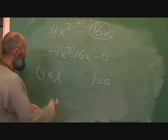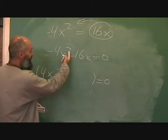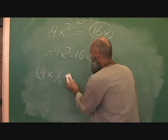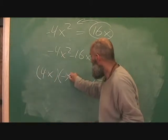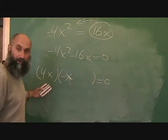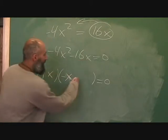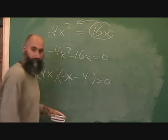What's left here is that's negative 4, so you need negative 1 here, and you have an x squared, you've got an x, so negative x. Over here, what do I multiply 4x by to give me negative 16x? Well, all I need is negative 4.